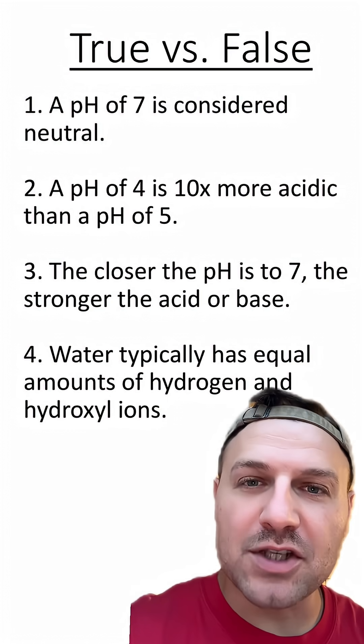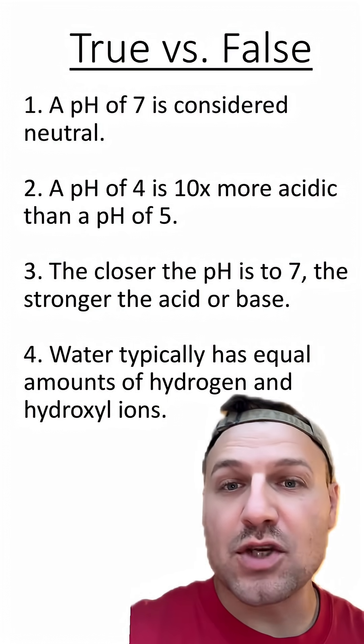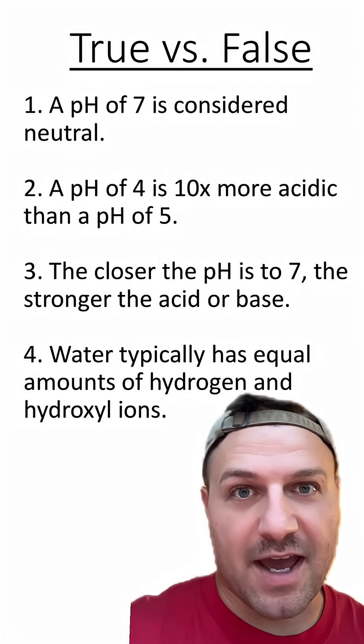Number one, a pH of 7 is considered neutral. Number two, a pH of 4 is 10 times more acidic than a pH of 5.